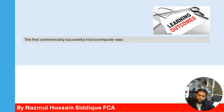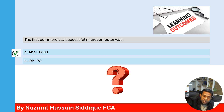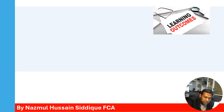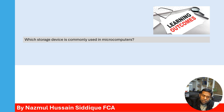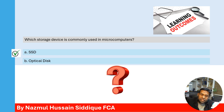Next question: What was the first commercially successful microcomputer — Altair 8800 or IBM PC? The correct answer is the Altair 8800. Next question: Which storage device is commonly used in microcomputers — Option A: SSD, or Option B: Optical disk? The correct answer is SSD; solid state drives are commonly used in microcomputers.